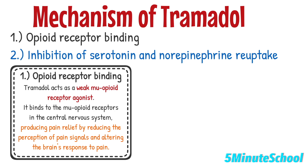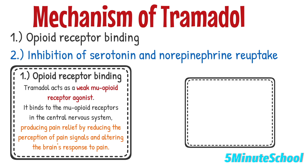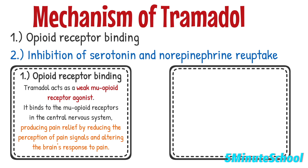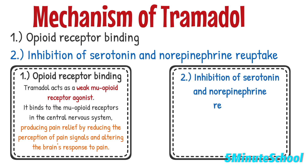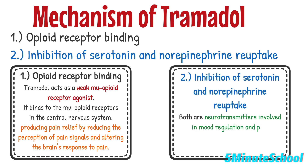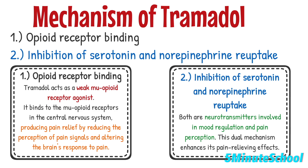In terms of serotonin and norepinephrine reuptake inhibition, tramadol inhibits the reuptake of serotonin and norepinephrine, which are neurotransmitters involved in mood regulation and pain perception. This dual mechanism enhances its pain relieving effects.